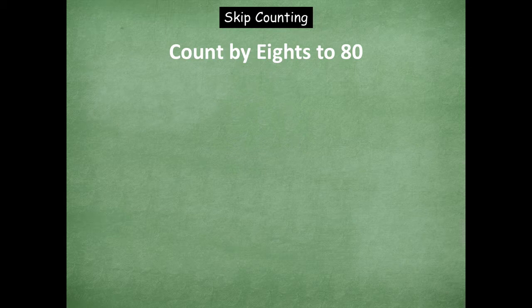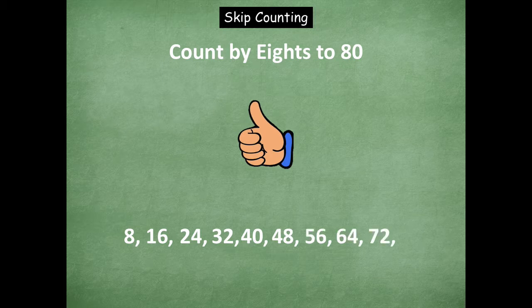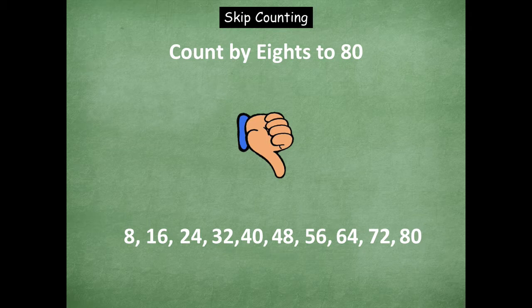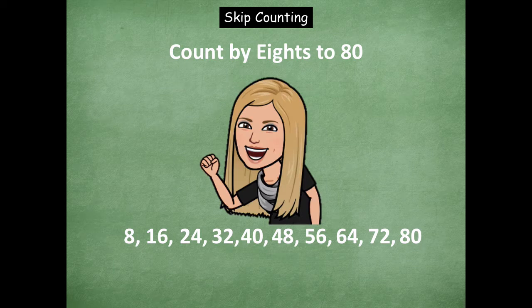Now we're going to count by eights to 80. Counting up: eight, 16, 24, 32, 40, 48, 56, 64, 72, 80 — stop. Rock on, friends! Now counting down from 80: 72, 64, 56, 48, 40, 32 — stop. Now counting back up: 32, 40, 48, 56, 64, 72, 80 — stop. Rock on, friends, good job with that one.